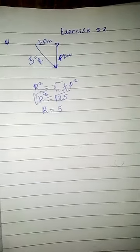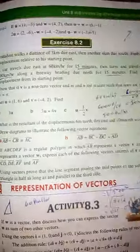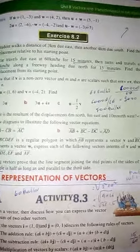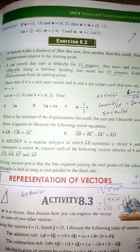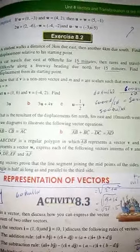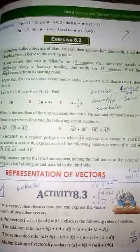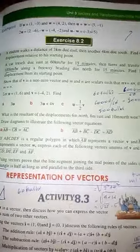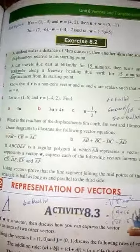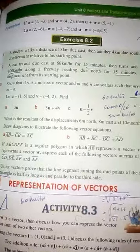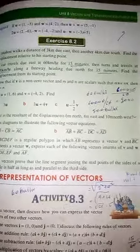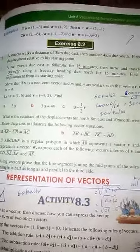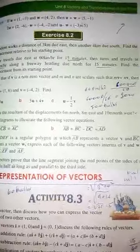Next problem: A car travels east at 60 km per hour for 15 minutes, then turns and travels north at 100 km per hour along a freeway for 15 minutes. Find the displacement from the starting point.